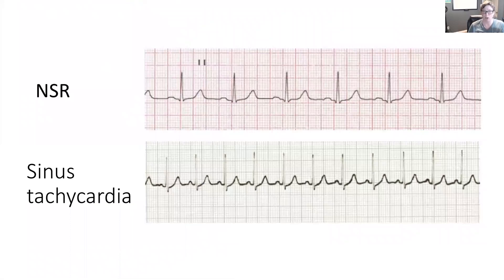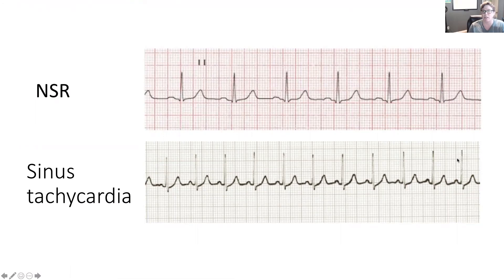When comparing the normal sinus rhythm strip on top with the sinus tachycardia strip on the bottom, you can immediately see there are more QRS complexes in the bottom strip. Using a six-second strip, count the complexes: 1, 2, 3, 4, 5, 6, 7, 8, 9, 10, 11 — multiply by 10 for a heart rate of 110. Compare that to the normal sinus rhythm: 1, 2, 3, 4, 5, 6 — a heart rate of 60. The characteristic feature of sinus tachycardia is that all waveforms and intervals are present but faster than 100 beats per minute.